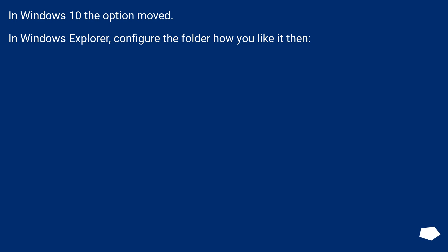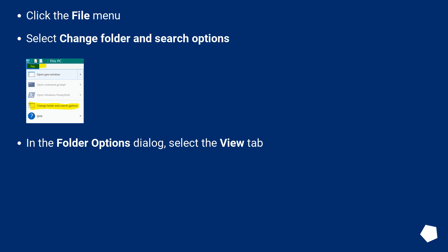In Windows 10, the option moved. In Windows Explorer, configure the folder how you like it, then click the File menu and select Change Folder and Search Options. In the Folder Options dialog, select the View tab.